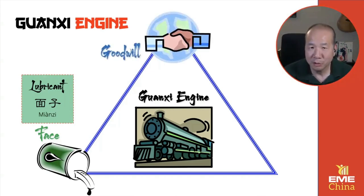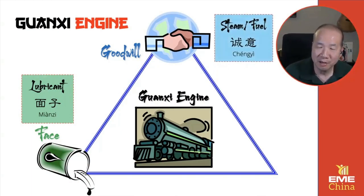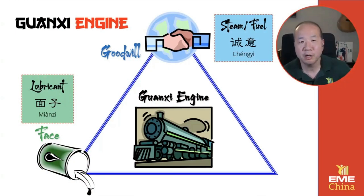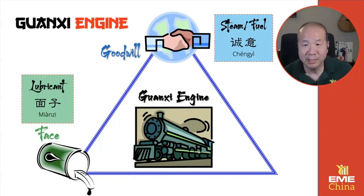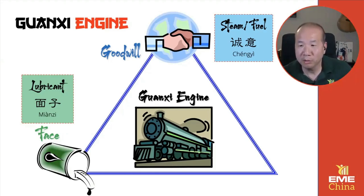Next is goodwill — and by the way, this is all in the workbook you're getting after this event, so you don't have to worry about writing it down. Goodwill is the fuel, the gas, the steam that powers the Guanxi Engine. You have to continuously feed this engine with your goodwill. You need face to lubricate it, and you need goodwill to power it.